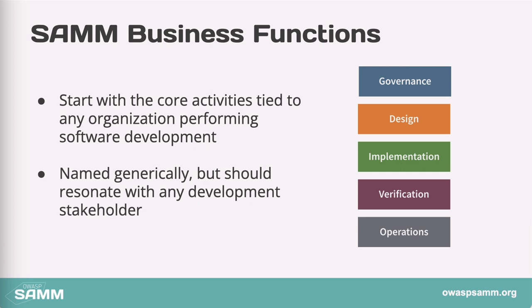Back to the model version 2. There are five business functions that should resonate with any stakeholder involved in the software development lifecycle. In naming the business functions there was quite some discussion, and the intent is for them to be generically named so that whenever a stakeholder looks at them, they should immediately have a reasonably good sense of what's going to happen — in governance, in design, and so on. We will look in depth into each of these categories, but here's a quick recap of what each business function represents.